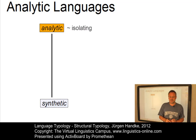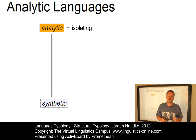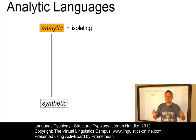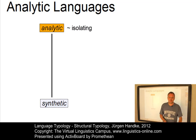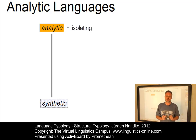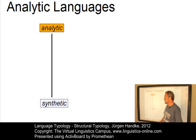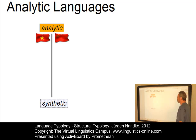Analytic languages, which are also referred to as isolating, generally do not allow the segmentation of their words — the words of an analytic language cannot or hardly be split into smaller units. Thus, a typical analytic language is one where there is a one-to-one correspondence between words and morphemes. Well-known examples of analytic languages are Vietnamese or Chinese.